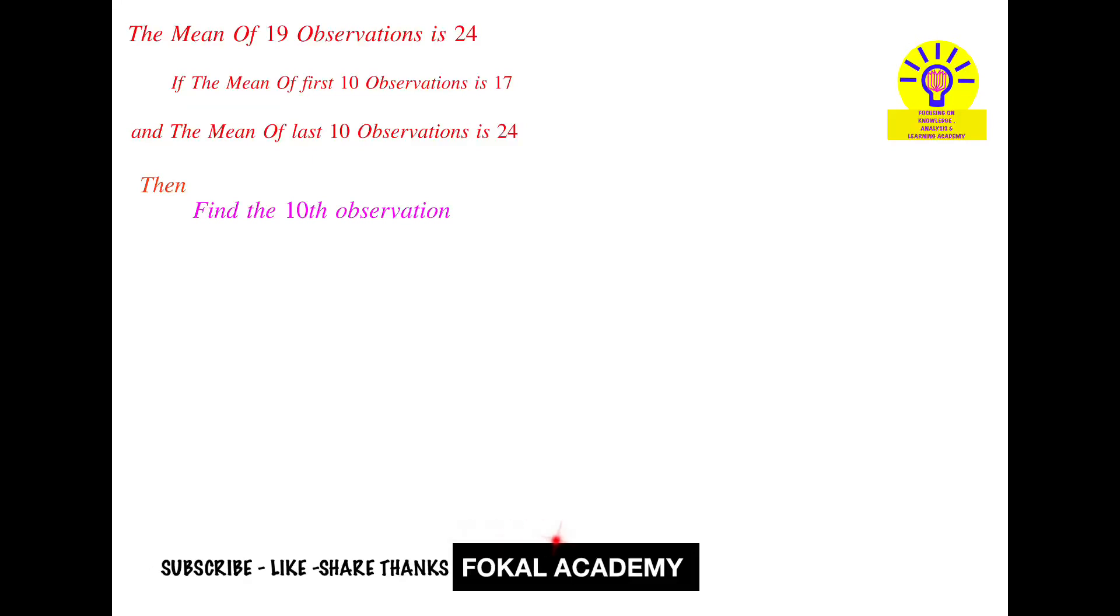Hi everyone, welcome to Focal Academy. In this problem, the mean of 19 observations is 24. Mean is the sum of observations divided by the total number of observations. The mean of the first 10 observations is 17, and the mean of the last 10 observations is 24. How can you find the 10th observation?